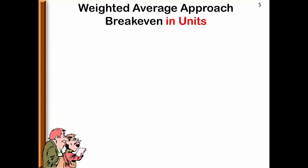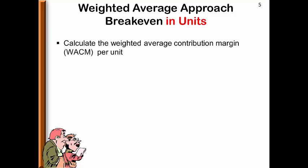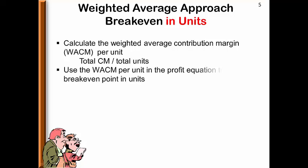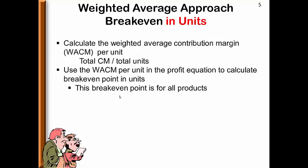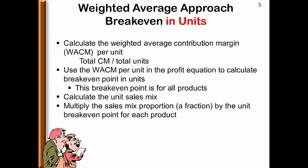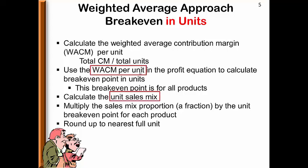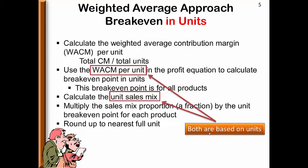For the weighted average approach to breakeven in units, we first calculate the weighted average contribution margin per unit. We then use that weighted average per-unit contribution margin in the profit equation to calculate the breakeven point in units — this is the breakeven point for all products. Multiplying the sales mix proportion by the total unit breakeven point gives us the number of units for each product. Always round up to the next full unit; rounding down may cause the company to incur a loss. Note: units require the weighted average contribution margin per unit and the unit sales mix.